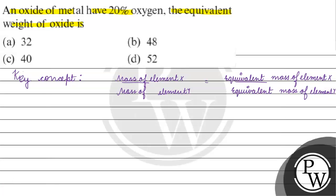Now what is happening? Oxide of metal is given which is 20% oxygen. Let the mass of metal oxide be X gram. Let's take X gram. So how do we have mass of oxygen?